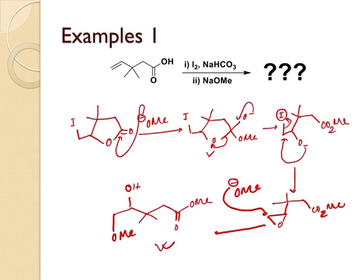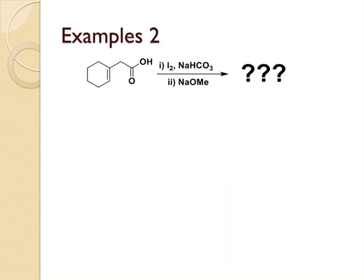So first halolactonization occurs, then treated with sodium methoxide gives this product. Let's take another example here. Here also first halolactonization occurs, but need to understand the stereochemistry.